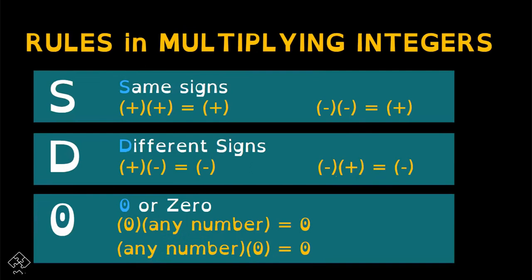We have rules in multiplying integers — three things we need to remember before we multiply integers. We have S, D, and O. S stands for same sign. When you multiply two numbers with the same sign, the product is positive. For example, a positive integer multiplied by a positive integer gives a positive integer. Same goes the other way: negative times negative, the product is also positive. So basically, same sign when multiplied gives a positive result.